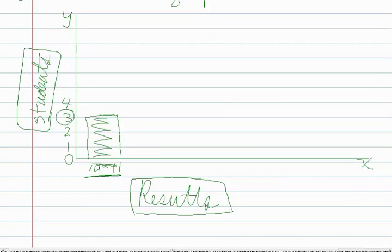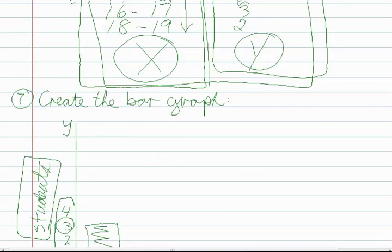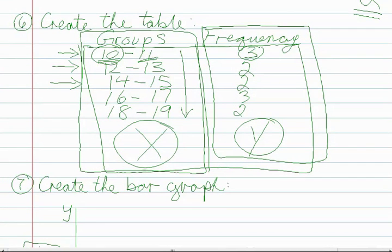All right, and on the y-axis we've labeled it students, because these numbers along the same side here tell us how many students got that mark. All right, so let's do the next bar and you'll see what I'm talking about.